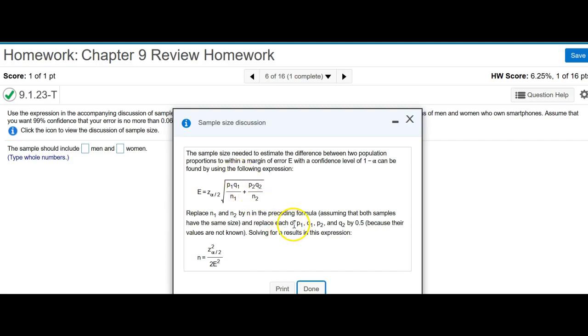Now we're going to assume some of these P1, P2, Q1, and Q2 is 0.5 because they're not given. Simplifying this expression makes it easier to deal with. This is the Z value for whatever alpha over 2 we're given, squared, divided by 2 times whatever maximum error we're given, squared.